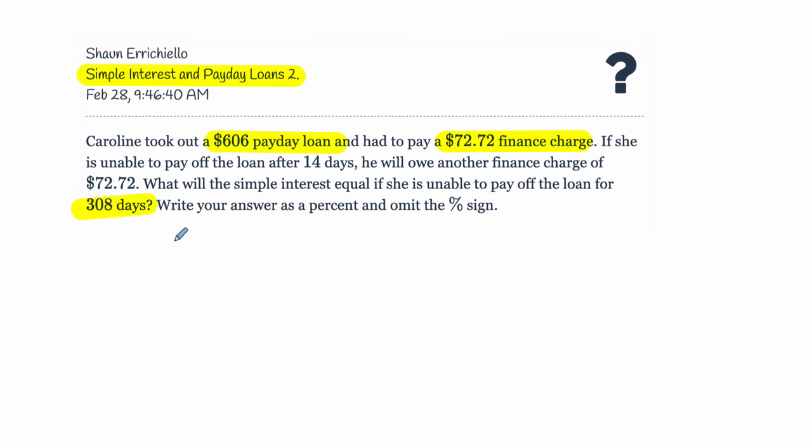So the first thing you want to do is look at that 308 days and say, how many complete pay periods is that? So we take 308, that's the number of days, and we divide it by 14 days, the number of days in a pay period. That will tell us how many times she'll have to renew the loan, in other words, how many times she'll have to pay that finance charge.